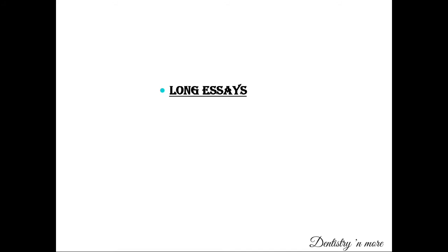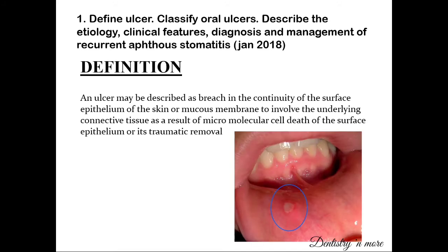The first topic is the ulcerative lesions of the oral cavity. The long essay that is frequently asked covers the definition of ulcer, the classification of ulcers, then the description of the etiology, clinical features, diagnosis, and management of recurrent aphthous stomatitis.